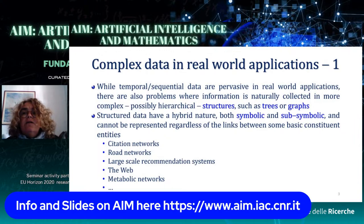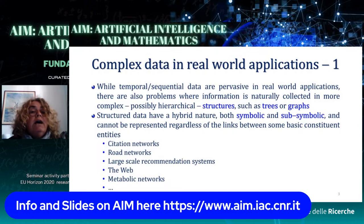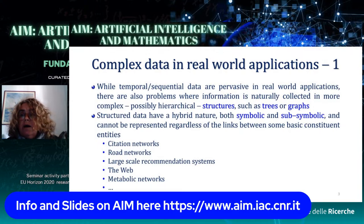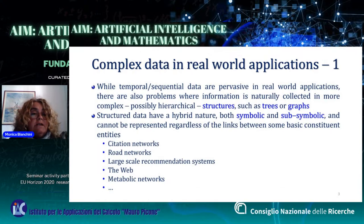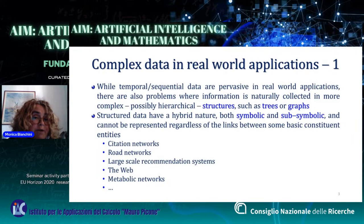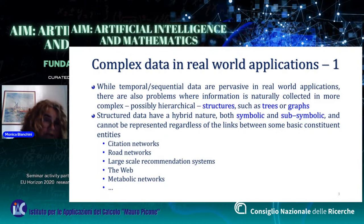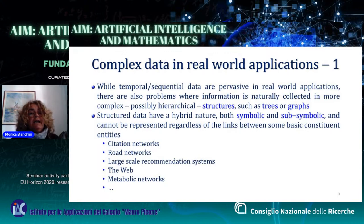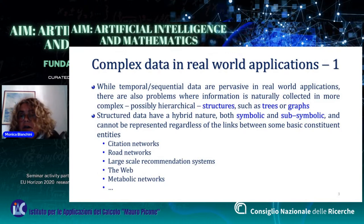Currently, there is a great variety of real-world problems concerning structured data processing, from those involving citation networks to metabolic networks, to web applications such as spam detection. Structured data have a hybrid nature — they are partly symbolic and partly sub-symbolic. The symbolic part of the information can be collected in labels attached to the nodes, whereas sub-symbolic information is attached to links between nodes.